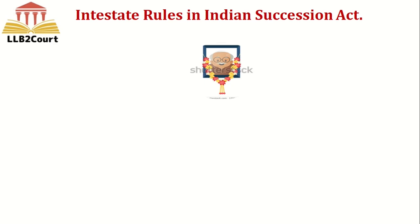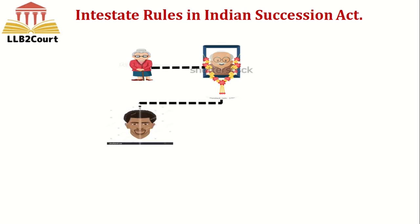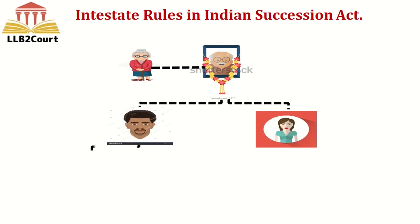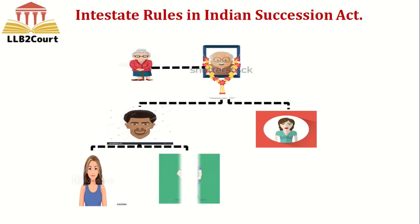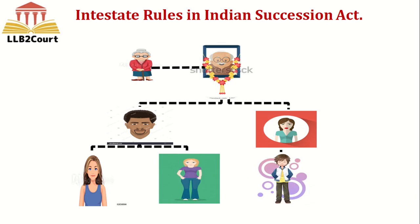Suppose an Indian Christian male dies intestate and he is survived by his wife, who becomes the widow. They have a son and a daughter. The son has two children and the daughter has a son — these children and grandchildren are called lineal descendants. When the deceased is survived by a widow and lineal descendants, the widow will get a 1/3 share and the lineal descendants will get a 2/3 share.